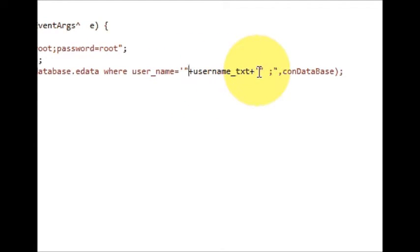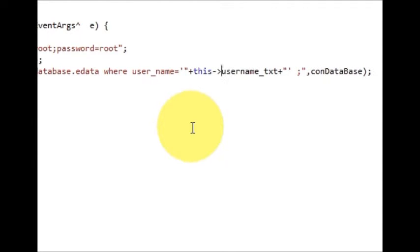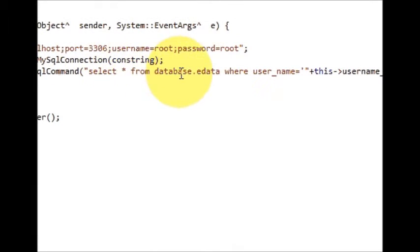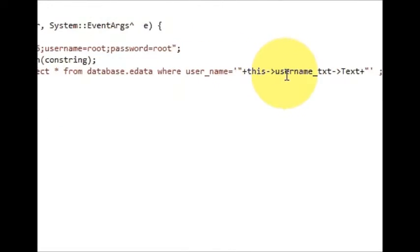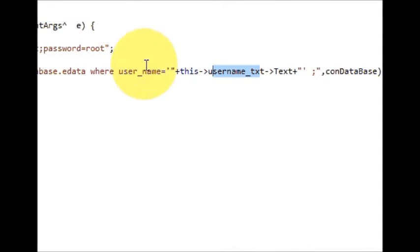Delete the double quote here and provide inside the single quote: single quote, double quote, and plus. This is my text box variable name. Before this text box I will write this and provide the arrow pointer, and after the text box variable I will provide once again the arrow and write text. So the query becomes: SELECT * FROM database.table WHERE username is equal to this — it will take your text from the text box and pass it into the query.